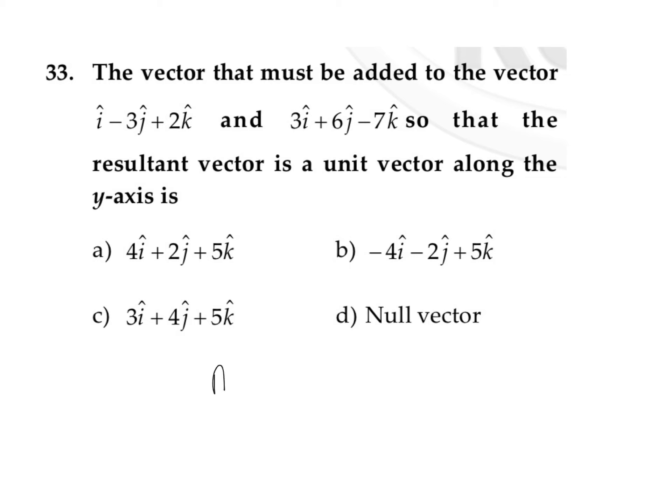So assume that the first vector given over here is taken as A vector and the second vector, take it as B vector. Along with these vectors, if I am adding another vector, take it as C vector, so the result should be a unit vector along the y-axis.